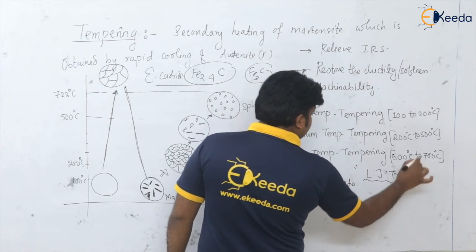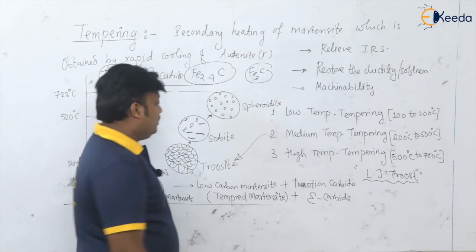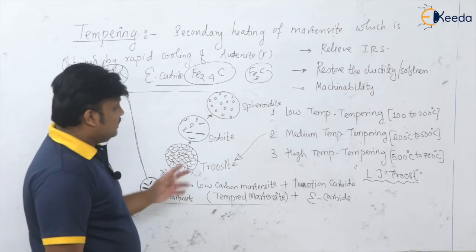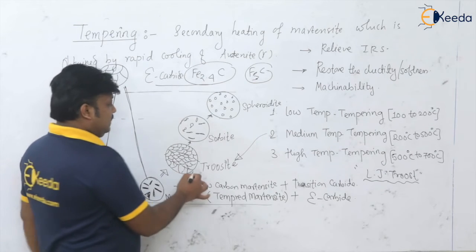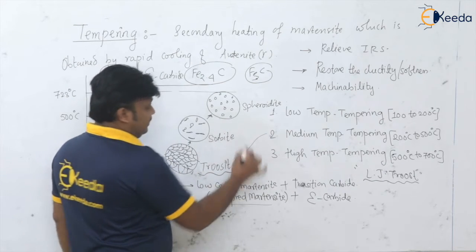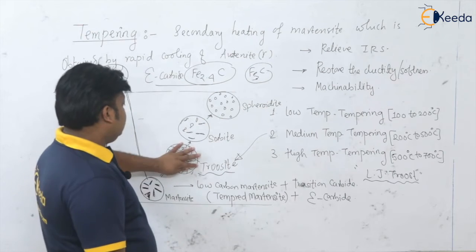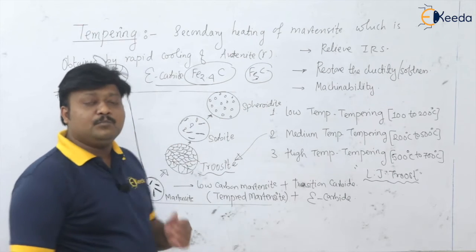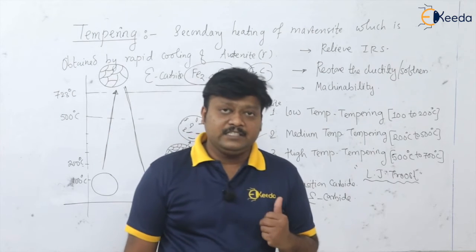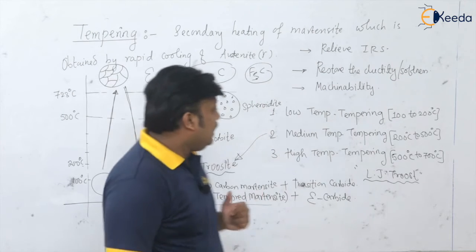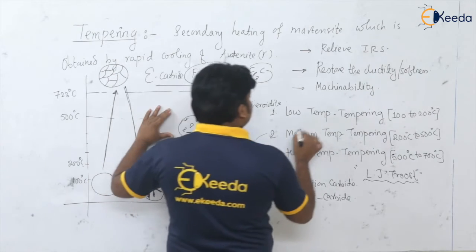This structure was named after a French scientist, and in his honor this structure is known as troostite. This is the product of medium temperature tempering in the temperature range of 200 to 500 degrees centigrade.